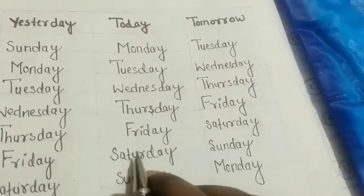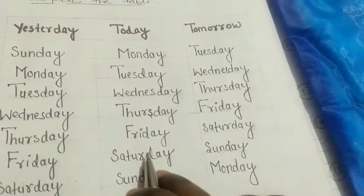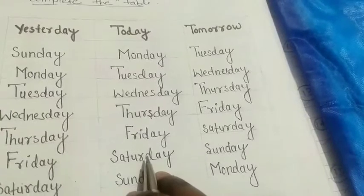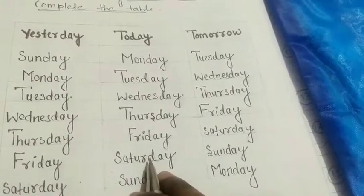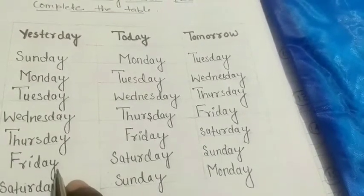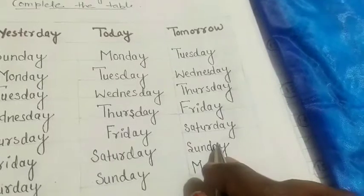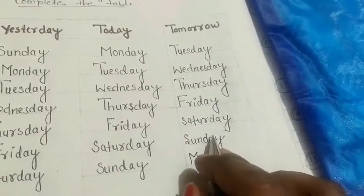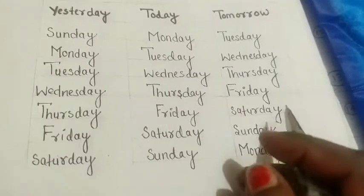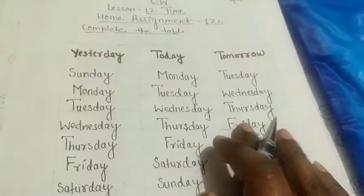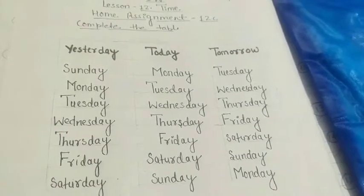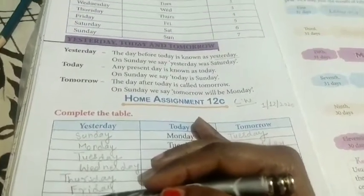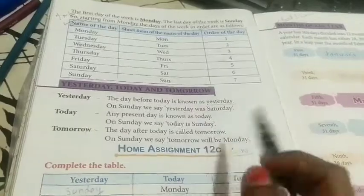Today's date is 6th February 2021, so the day is Saturday. Yesterday was Friday and tomorrow will be Sunday. Write this in your classwork copy. Also, students, read and learn page number 166 — you have to read all these topics.